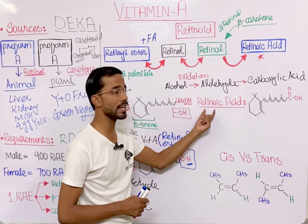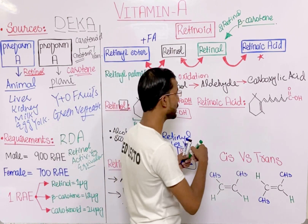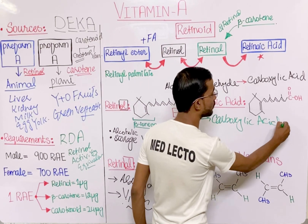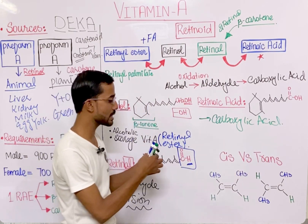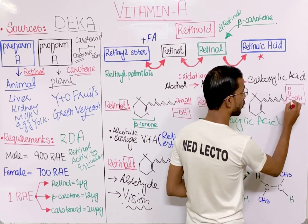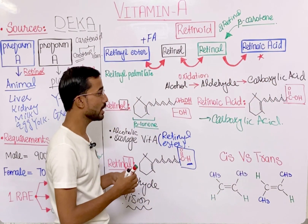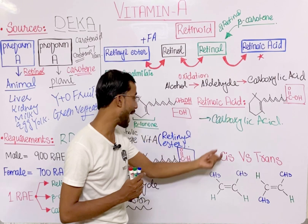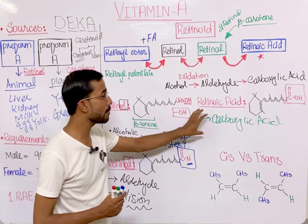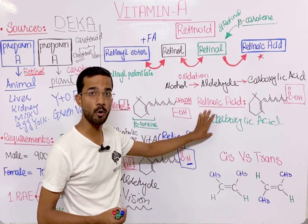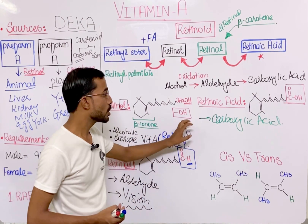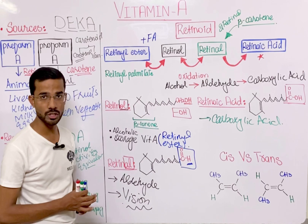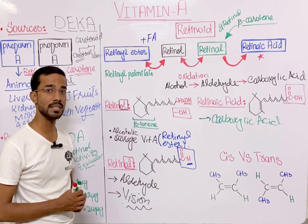Retinoic acid is the carboxylic acid form of Vitamin A, containing the carboxylic acid functional group (COOH). It is the irreversible, stuck form — it cannot convert back into retinal or retinol. Retinoic acid plays an important role in conditions like acne. These are the different forms of Vitamin A: retinol, retinal, and retinoic acid.